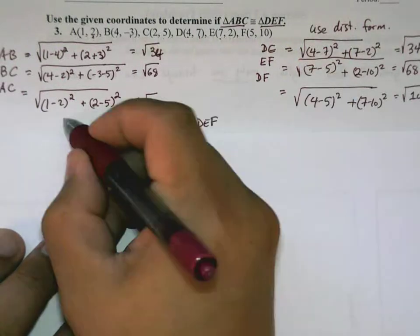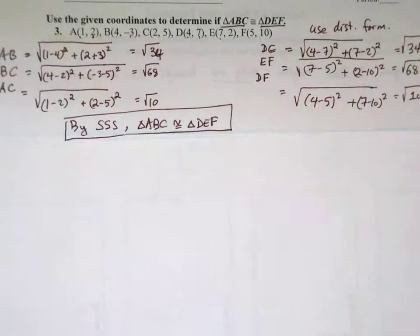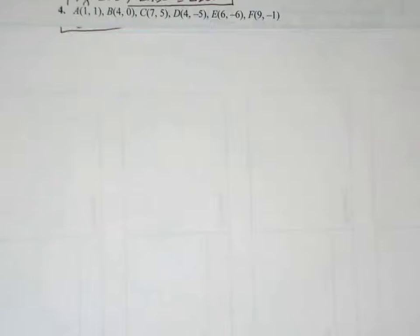So we can conclude that by side-side-side, triangle ABC is congruent to triangle DEF. So now we'll look at another example.